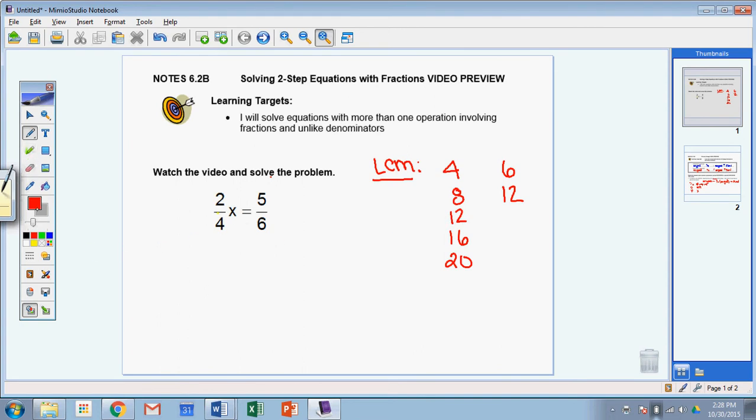So once you find that number, the process is the same essentially for the rest of the problem to solve it. I'm going to draw my balance bar, and then I'm going to multiply every single term by that LCM, which was 12. So I'm going to multiply this by 12 over here, and I'm going to multiply this fraction by 12.